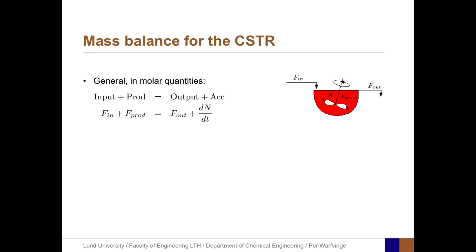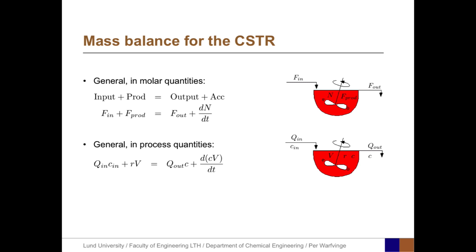The mass balance for the CSTR builds on the general mass balance for all systems: input plus production equals output plus accumulation. In molar quantities, F for molar flux and N for molar amount, the mass balance equation is F_in + F_prod = F_out + dN/dt. In process quantities, this can be expressed as Q_in × C_in + R × V = Q_out × C + d(C×V)/dt.